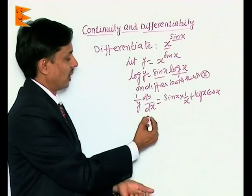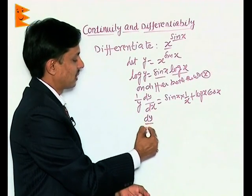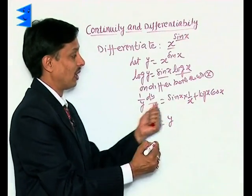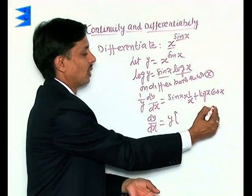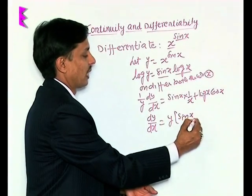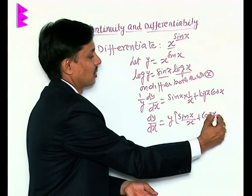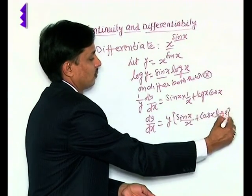We are bound to obtain here the value of dy by dx. That will be y times this expression. Y will transfer to right hand side and will multiply to the entire expression: sin x upon x plus cos x times log x.